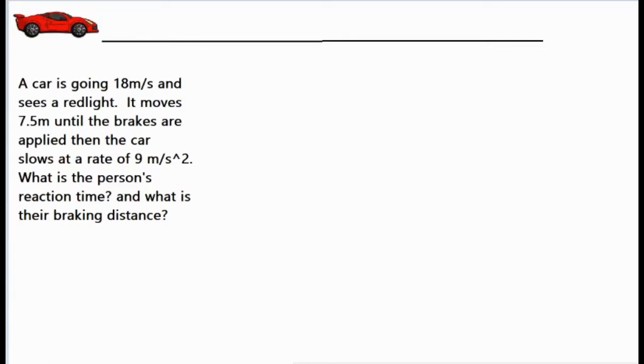It moves 7.5 meters until the brakes are applied, then the car slows at a rate of 9 meters per second squared. What is the person's reaction time and what is their braking distance? So it's a two-part problem where the car is initially going at a constant velocity of 18 meters per second.